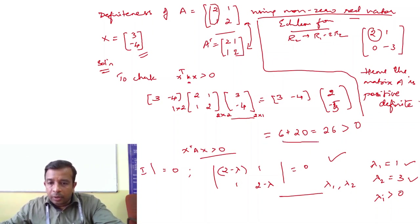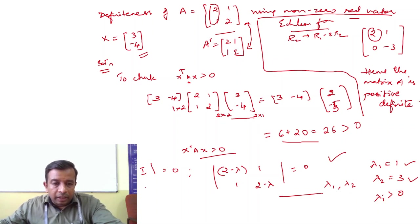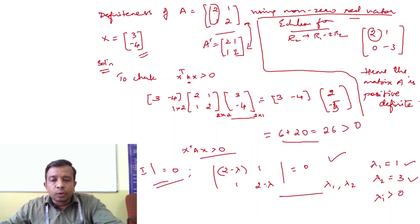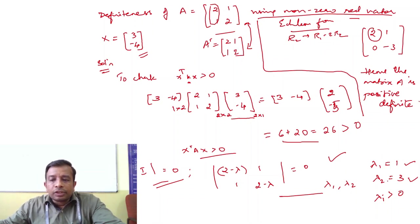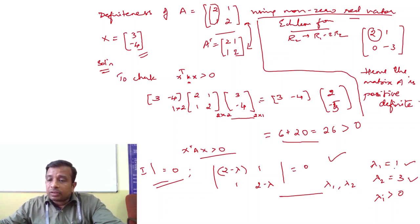The result is 26, which is greater than 0. For the second condition — eigenvalues — we solve det(A − λI) = 0, giving [2−λ, 1; 1, 2−λ] = 0. Solving this, λ₁ = 1 and λ₂ = 3, both greater than 0. Hence the second condition is satisfied.